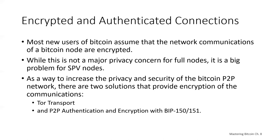Bloom filters do work pretty well at reducing the loss of privacy. But even with bloom filters, an adversary monitoring the traffic of an SPV client or connected to it directly as a node in the P2P network can collect information over time to learn the addresses in the wallet of the SPV client. Most new users of Bitcoin assume that the network communications of the Bitcoin node are encrypted. In fact, the original implementation of Bitcoin communicates entirely in the clear. While this is not a privacy concern for full nodes, it's a big problem for SPV nodes. To increase the privacy and security of the Bitcoin P2P network, there are two solutions: Tor transport and P2P authentication encryption with BIP 150/151.